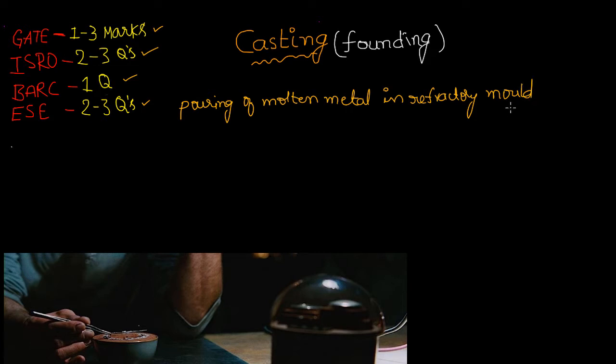After solidification the mold is broken and the casted product is taken out. That's what casting is. The main keyword in the definition is refractory mold. Refractoriness is the property of the mold material to withstand high temperature without fusing into the base material. By the way, casting is also known as founding.